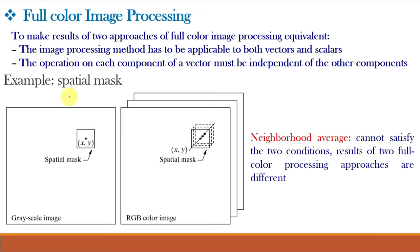For example, this figure shows neighborhood spatial processing of grayscale image and full color image. For this grayscale image, the spatial mask will result in the neighborhood averaging of pixel XY. While for this RGB color image, the spatial mask will result into averaging of three different components of R, G and B for the same pixel location XY. So this neighborhood averaging cannot satisfy the two conditions and the results of two full color processing approaches are different.